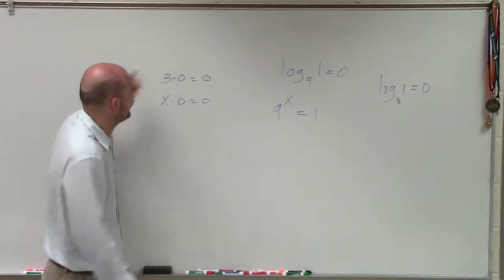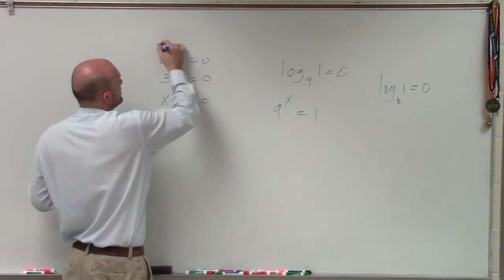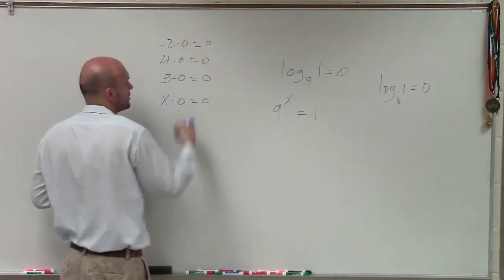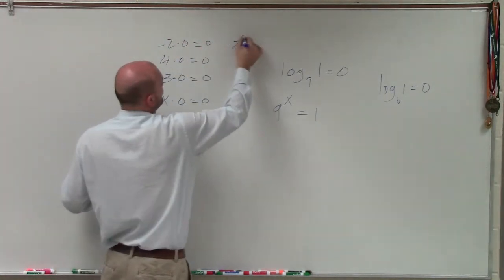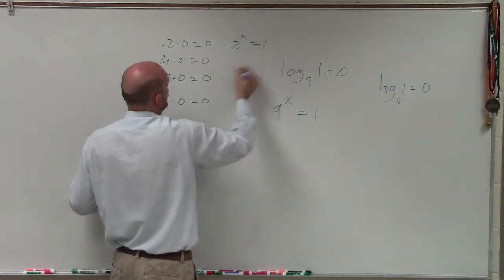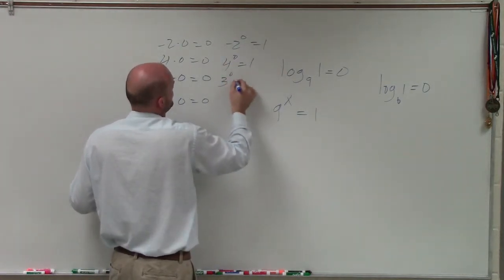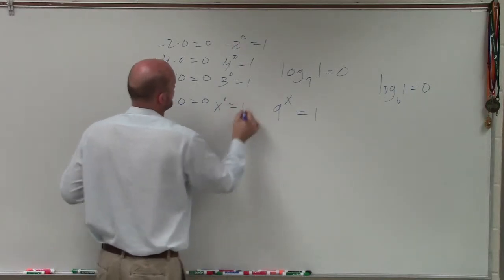And that's the same thing when we deal with numbers. 4 times 0 equals 0. Negative 2 times 0 equals 0. Well, you can do the same thing. Negative 2 raised to the 0 power equals 1. 4 to the 0 power equals 1. 3 to the 0 power equals 1. x to the 0 power equals 1.